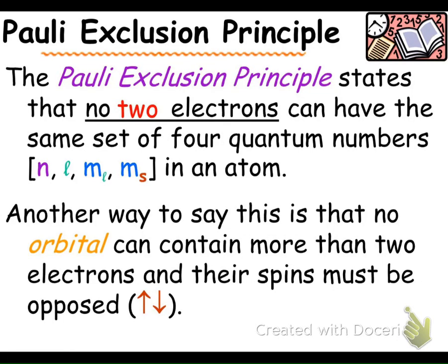These are our notes on the Pauli Exclusion Principle, Hund's Rule, and orbital diagrams. The Pauli Exclusion Principle states that no two electrons can have the same set of four quantum numbers in an atom. Another way to say this is that no orbital can contain more than two electrons, and their spins must be opposite.